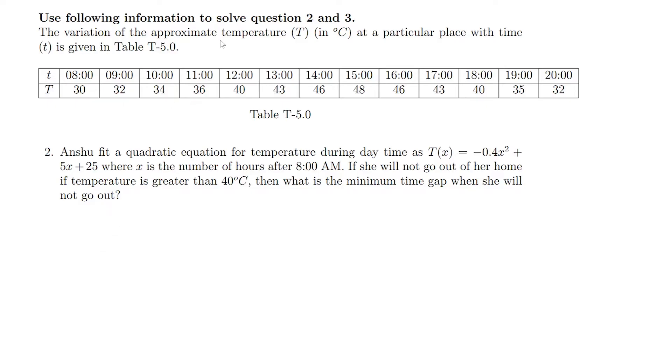We are supposed to use this information, this particular table, to solve question 2 and 3. We will do question 2 now, and this table gives us the variation of approximate temperature T, the temperature T in degree Celsius at a particular place with time small t.